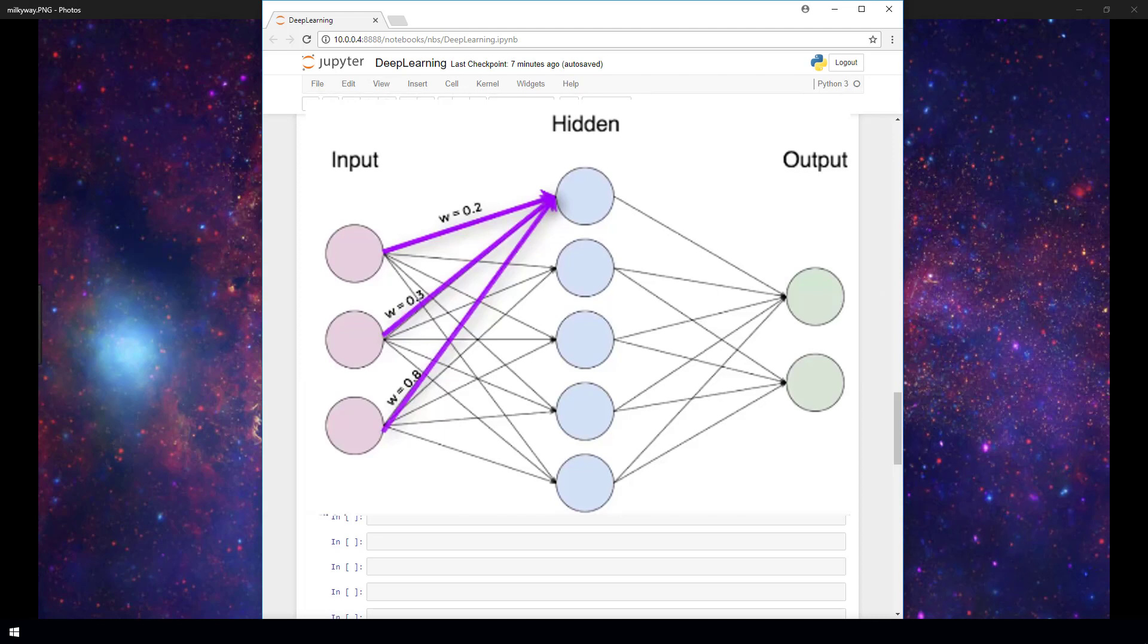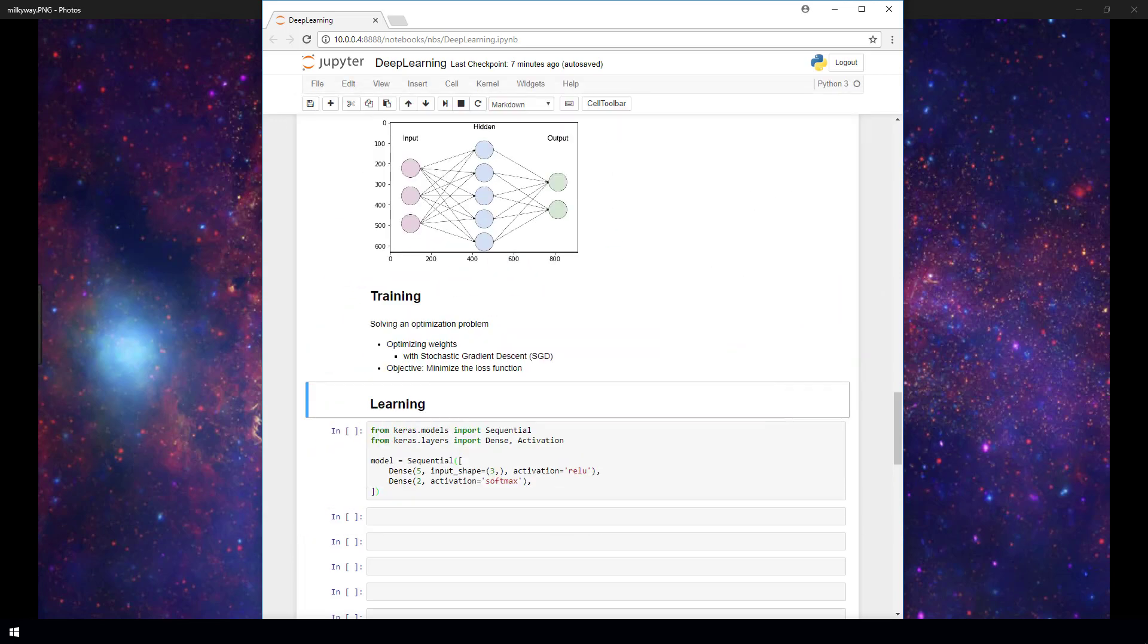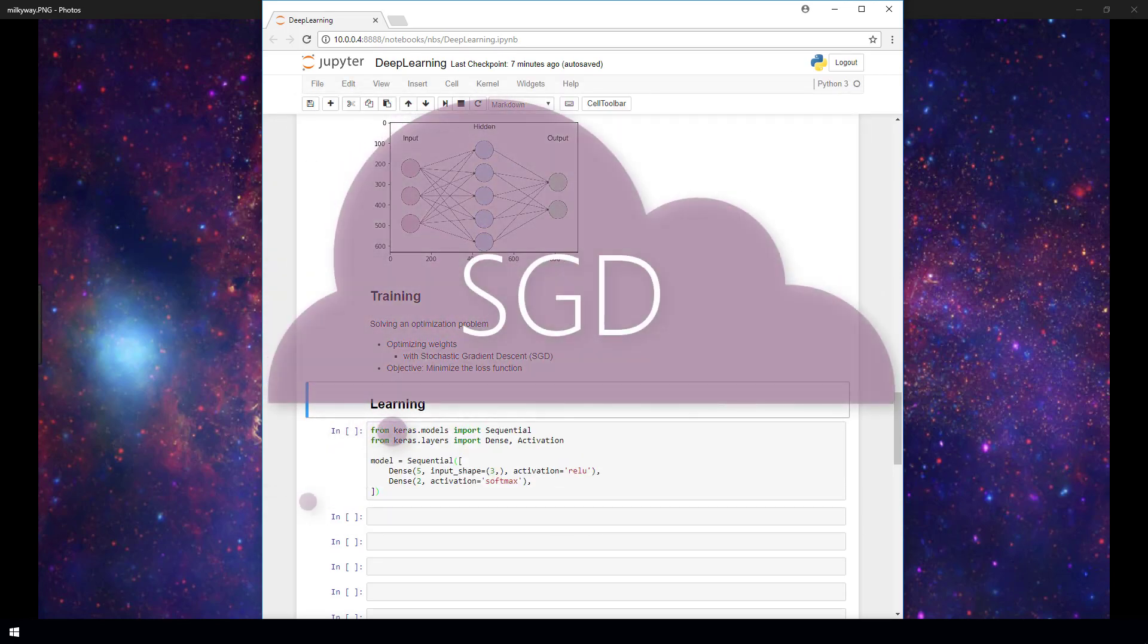In terms of how the weights are being optimized, that's going to depend on the optimization algorithm, or optimizer, that you choose to use for your model. The most widely known optimizer is called Stochastic Gradient Descent, or SGD.